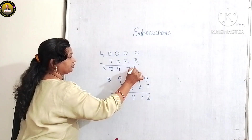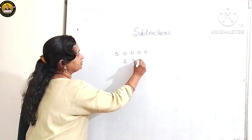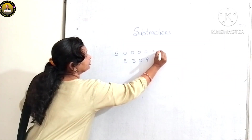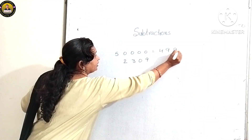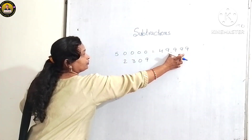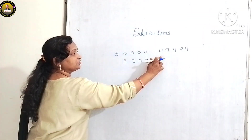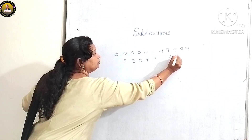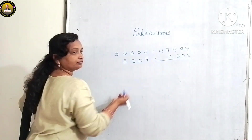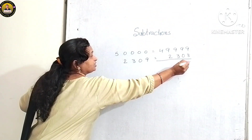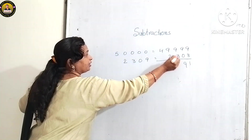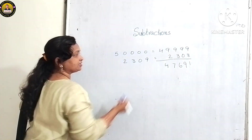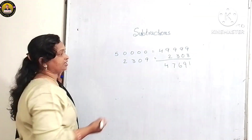For 50,000 minus 23,09: the predecessor of 50,000 is 49,999 — four zeros, four nines, predecessor of 5 is 4. The predecessor of 23,09 is 23,08. Subtract: 9 minus 8 is 1, 9 minus 0 is 9, 9 minus 3 is 6, 9 minus 2 is 7. The final answer is 47,691.